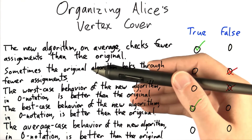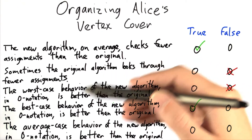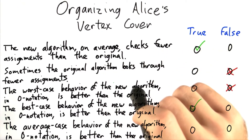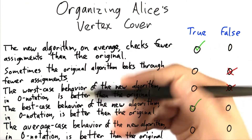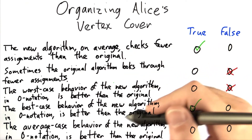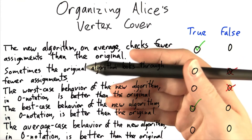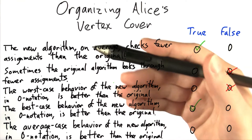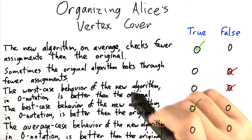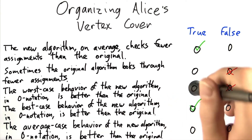However, the best-case behavior is actually better than the original algorithm. The best case is that there happens to be a minimum vertex cover of only one vertex, and it checks that first — and if it does, it's done. Whereas the best case of the original algorithm is still exponential, because it has to check every possible assignment. So the best-case behavior is far better.